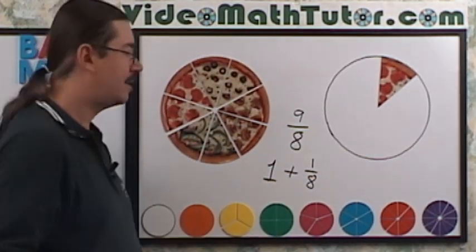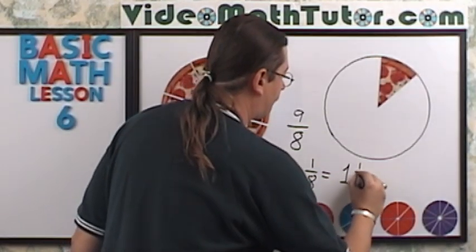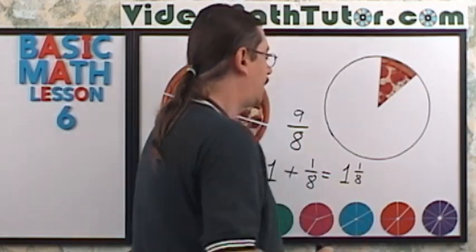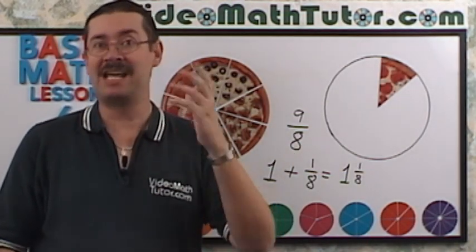So we have one-eighth. Now we can actually combine this together. And we'll look like this. We would read this one and one-eighth. And this brings us to our next definition.